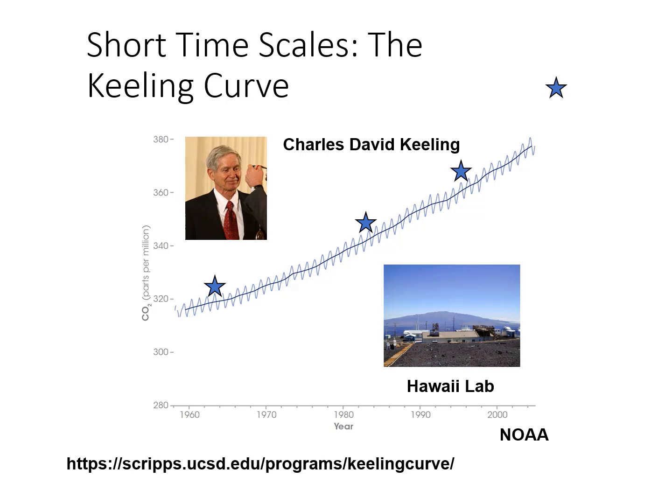This is the Keeling Curve, which shows globally how the concentration of carbon dioxide in the atmosphere has changed over time. Charles David Keeling started measuring CO2 in 1958, and these measurements continue to today.